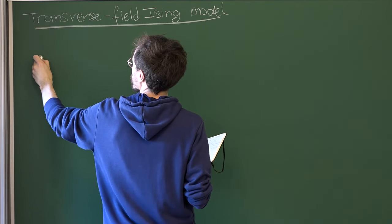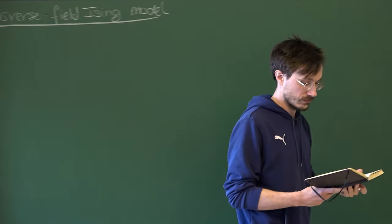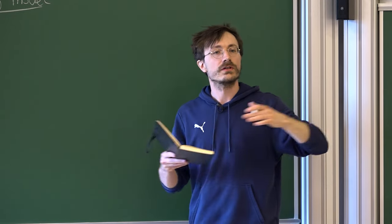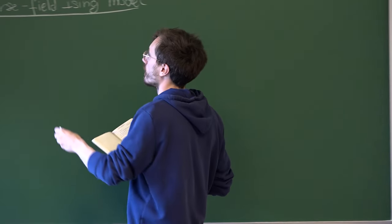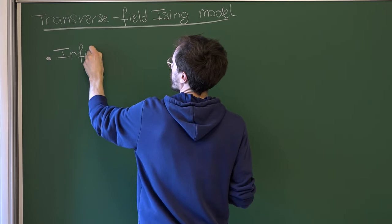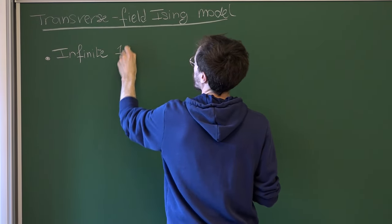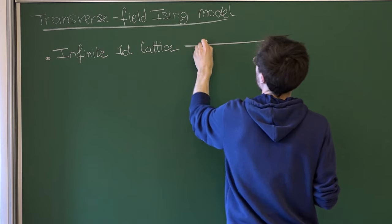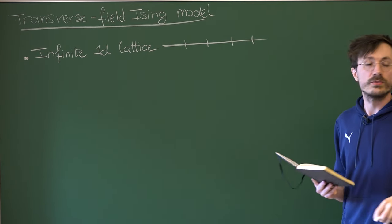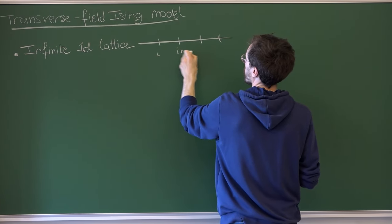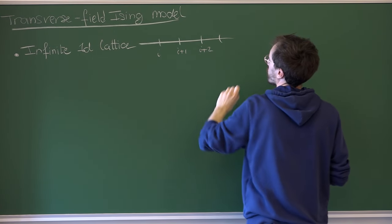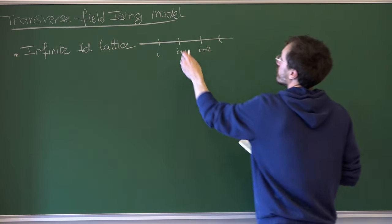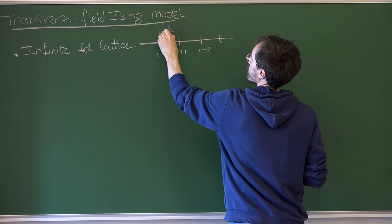I'm going to define the transverse field Ising model. I'm going to work on an infinite one-dimensional lattice, which I will sometimes refer to as a chain. We have sites labeled by integers. Sometimes I will also need to refer to the links, or the sites in between two other sites — in that case I will label them by half-integers.